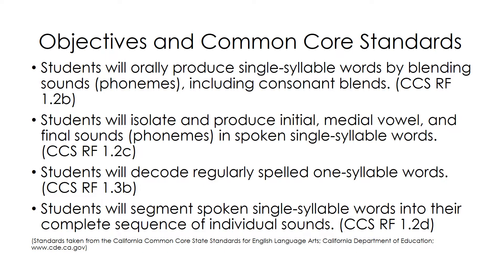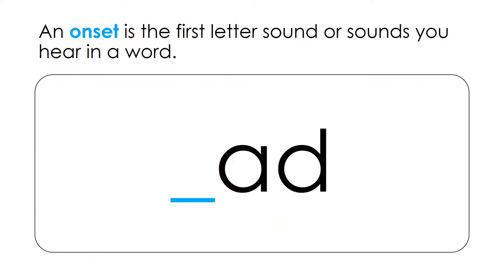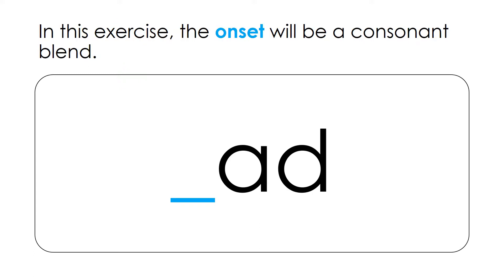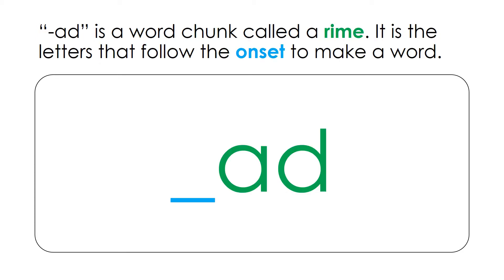These are the Objectives and Common Core Standards. An onset is the first letter sound or sounds you hear in a word. In this exercise, the onset will be a consonant blend. ADD is a word chunk called a rhyme. It is the letters that follow the onset to make a word.